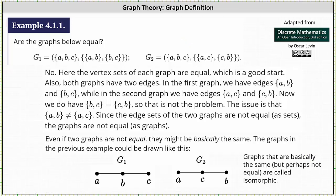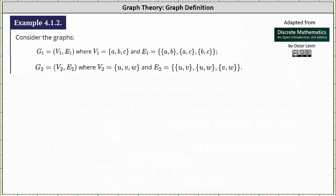Before we go, though, let's look at a second example. We're asked to consider the graph G1 and the graph G2, where the graph G1 has vertices {A, B, C} and edges {{A, B}, {A, C}, {B, C}}, and the graph G2 has vertices {U, V, W} and edges {{U, V}, {U, W}, {V, W}}.